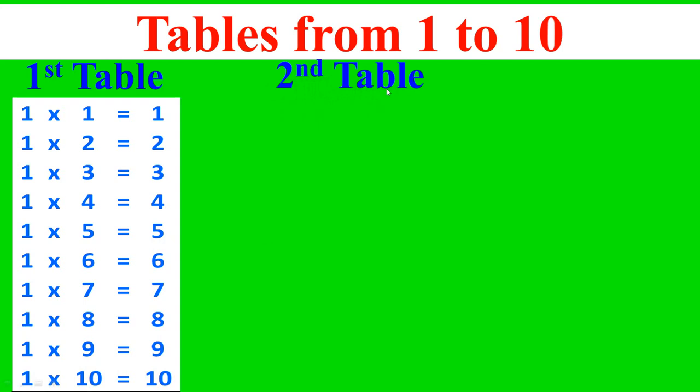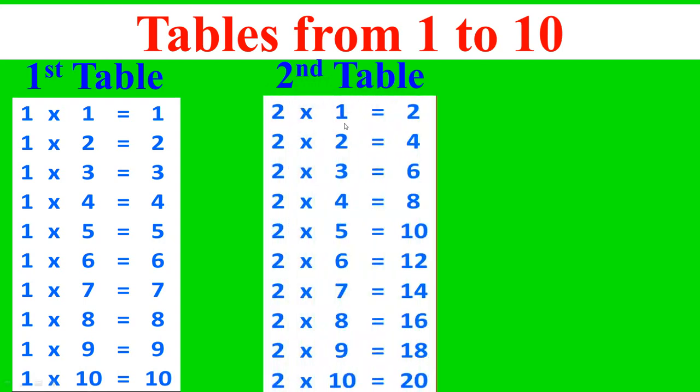Second table: 2 times 1 equals 2, 2 times 2 equals 4, 2 times 3 equals 6, 2 times 4 equals 8, 2 times 5 equals 10, 2 times 6 equals 12, 2 times 7 equals 14, 2 times 8 equals 16, 2 times 9 equals 18, 2 times 10 equals 20.